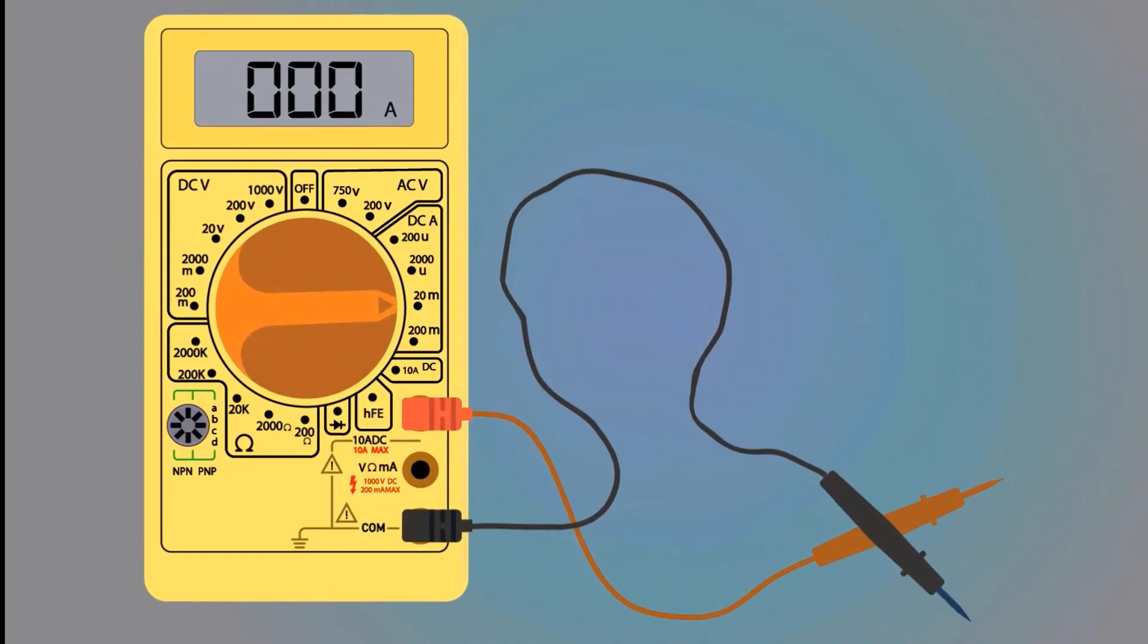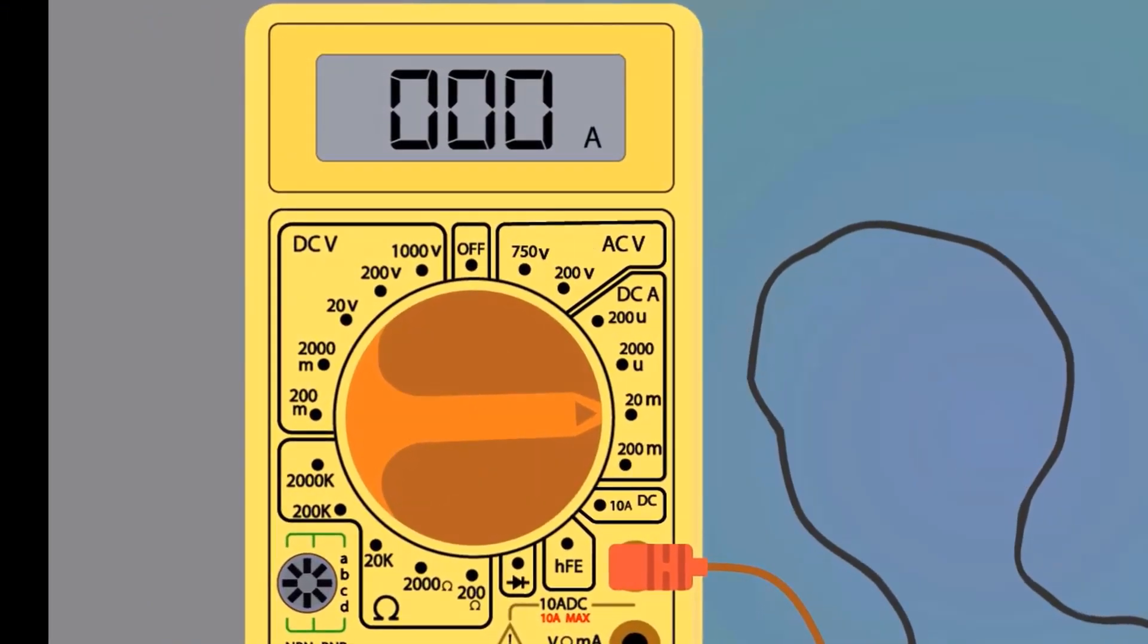Maybe the load will consume more current, so select the maximum range of DC current. The maximum measuring range is 10 amperes.